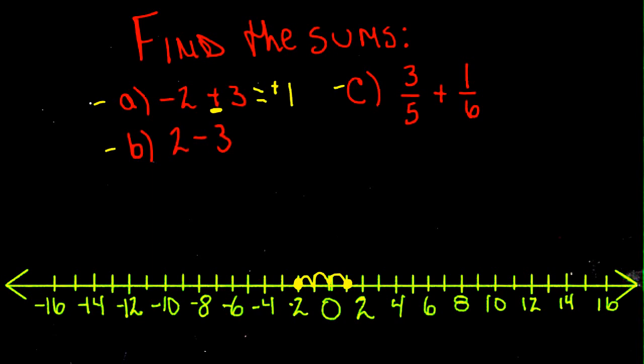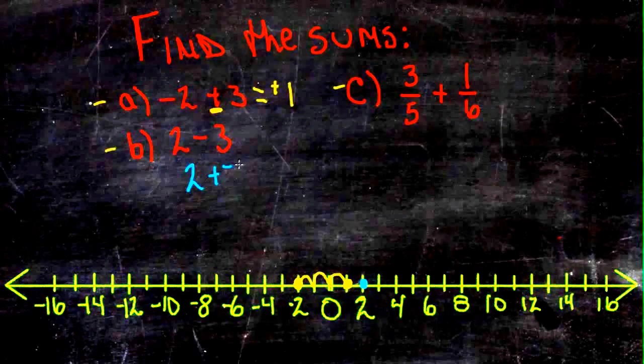Our second example is 2 minus 3. Let me do this one in different colors so it's easier to see. This number starts here at 2, and now we're subtracting 3. Well, subtracting 3 is the same thing as adding a negative, so this really could be written as 2 plus negative 3.